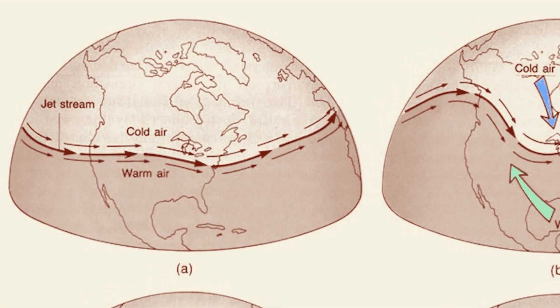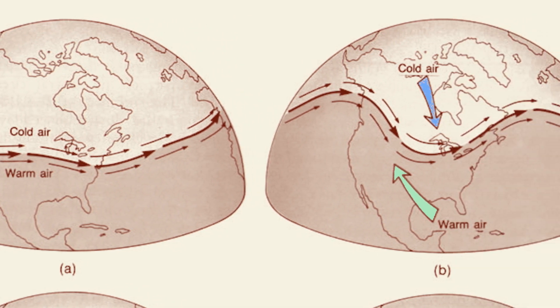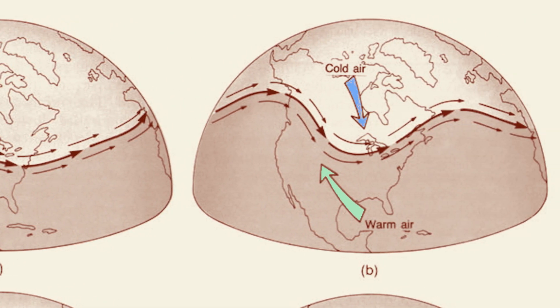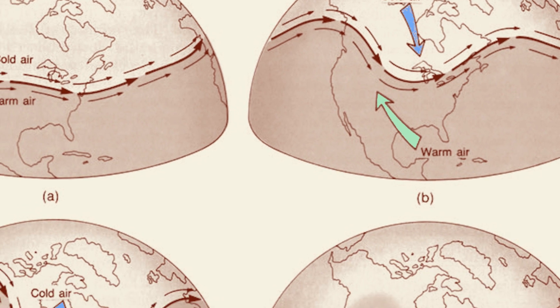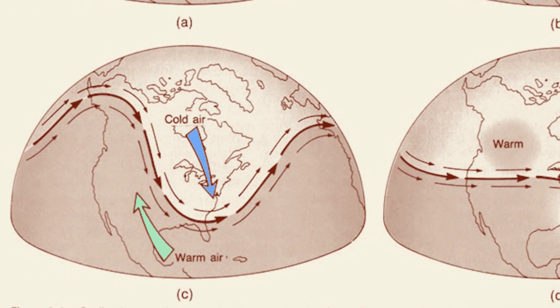Very often, high-altitude winds drain the jet stream of the energy required for the meandering. Sometimes they do not. Then, the meandering will cause a succession of alternating high-pressure and low-pressure volumes around the jet stream.